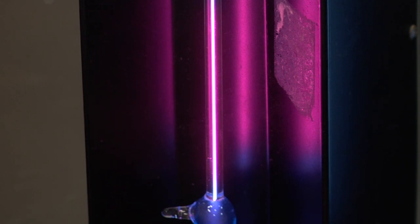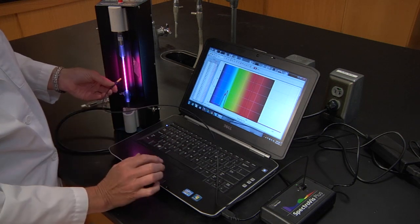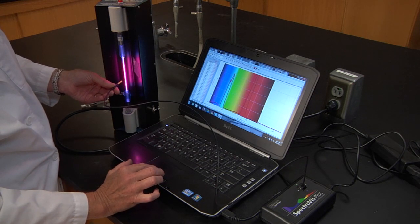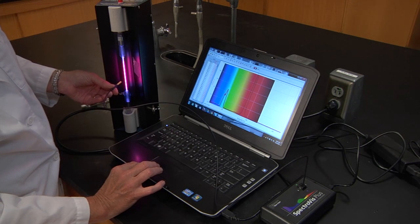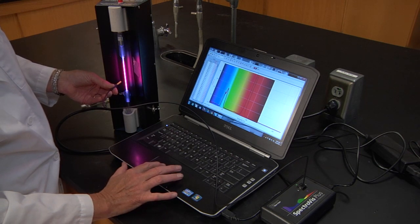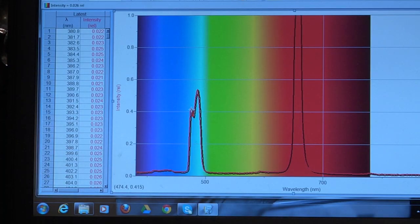So we're going to put our fiber optic cable next to the light and you can see what wavelengths are being emitted. Here you can see three very distinct peaks and that makes up the fingerprint for hydrogen.